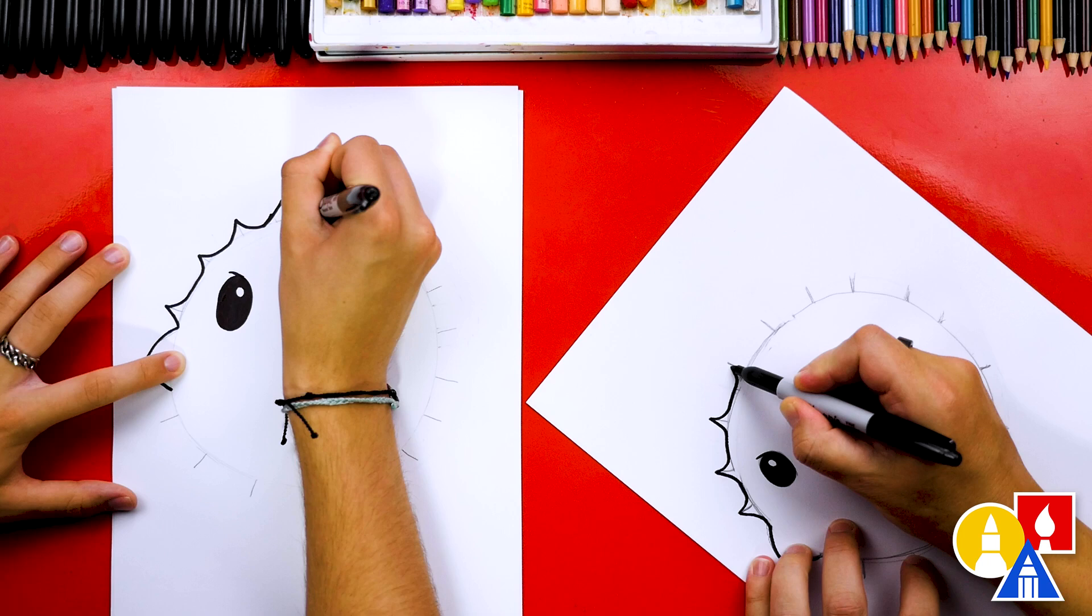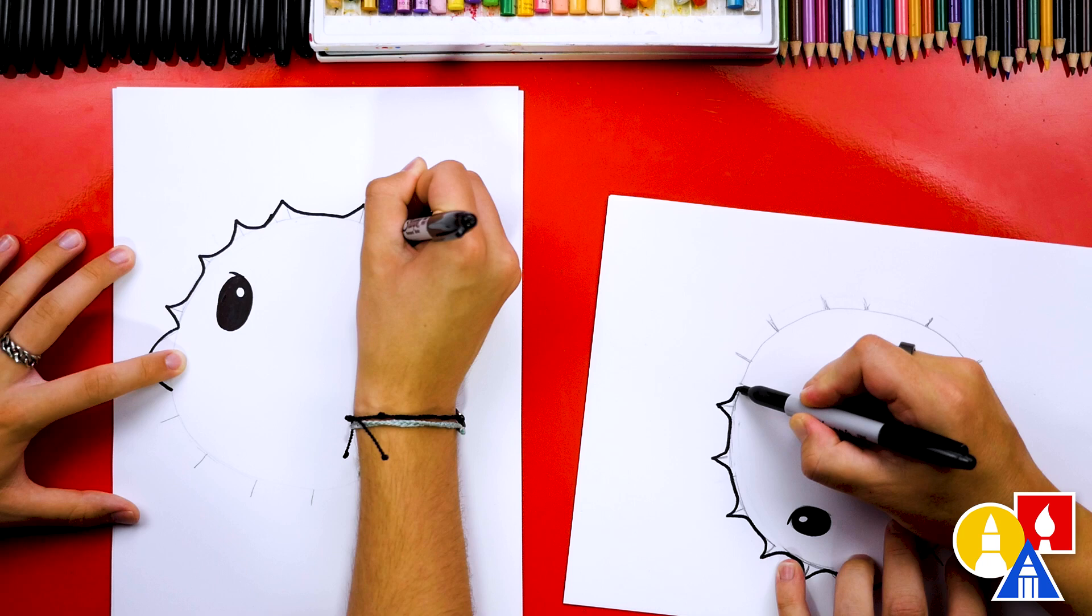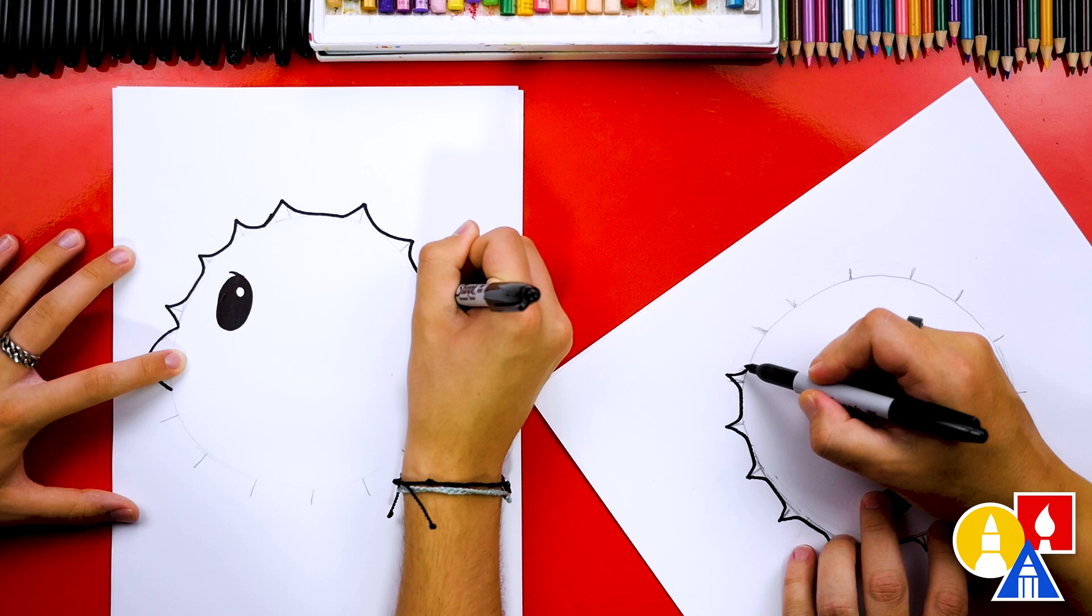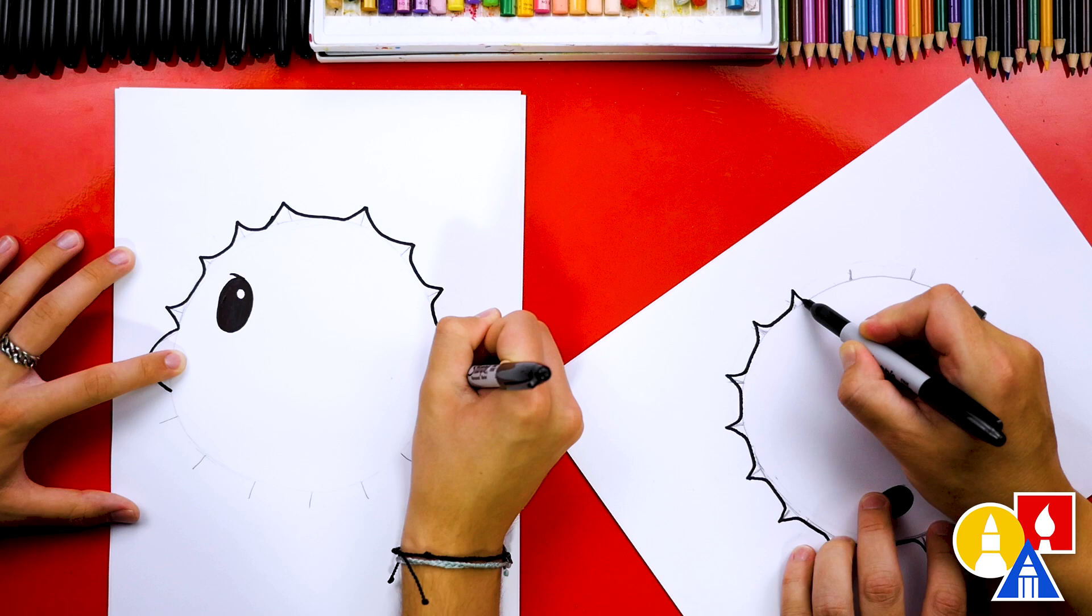And if you need to, you can turn your paper too, if that makes it a little easier. Oh, this is fun. It's already starting to look like a really cool blowfish, puffer fish for sure. Keep going over here. I'm going to just keep turning my paper and go all the way around the bottom of the fish too.